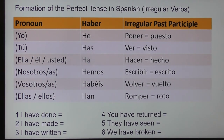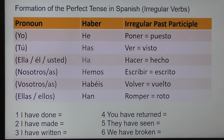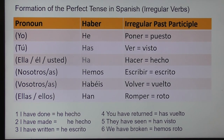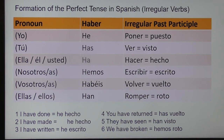Have a go at numbers one to six practicing those irregular verbs. Here are the answers: I have done / I have made — he hecho, because hacer means to do and to make. I have written — he escrito. You have returned — has vuelto. They have seen — han visto. And finally, we have broken — hemos roto.